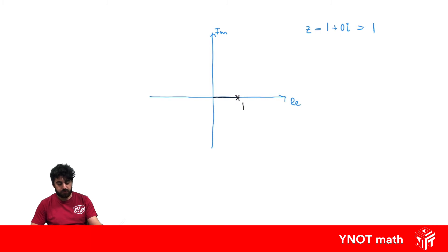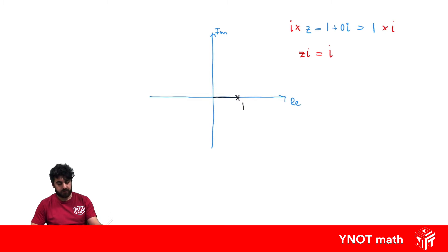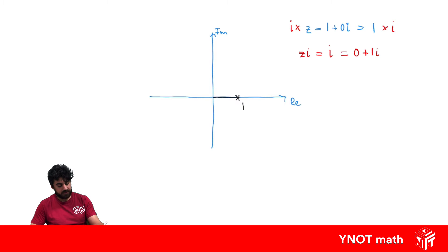Let's multiply this complex number by i. Multiplying both sides by i, we get zi. Now 1 times i is just i. So we have the complex number 0 plus 1i, and that vector goes through the point 1 on the imaginary axis.